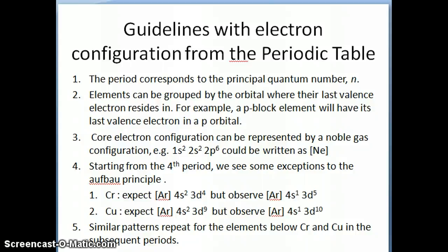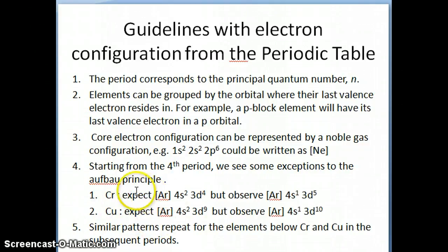Hi everyone. I want to continue by doing an example of how to write electron configuration for an element, and then I'm going to close off this discussion of electron configuration by talking about the electron configuration of ions. But let's first talk about some exceptions in the electron configuration.